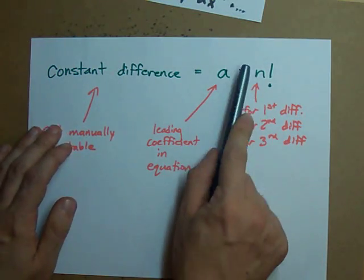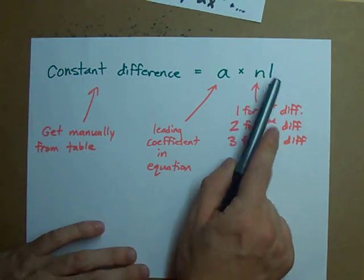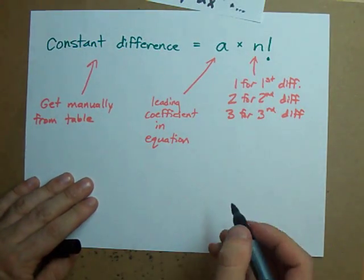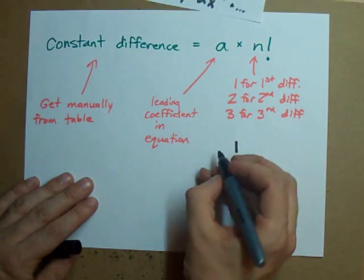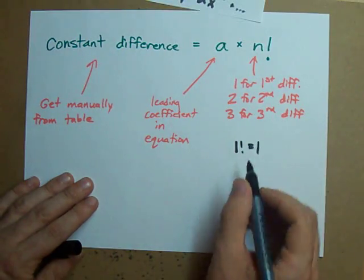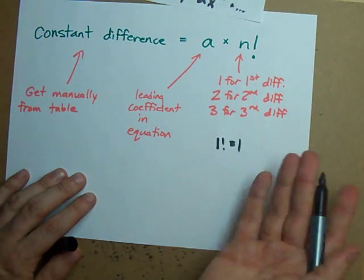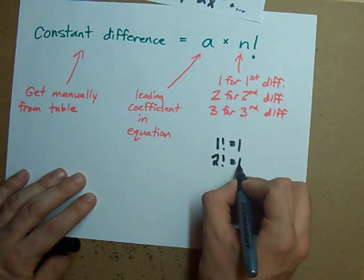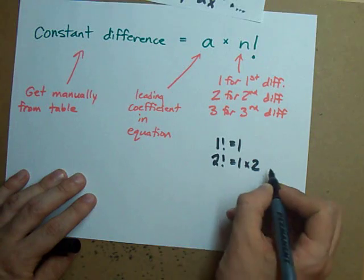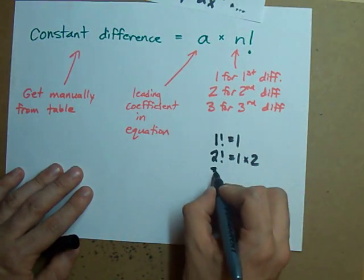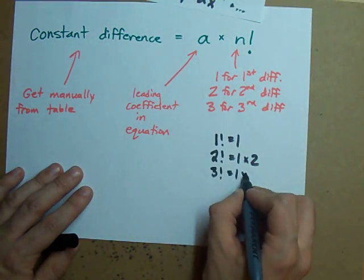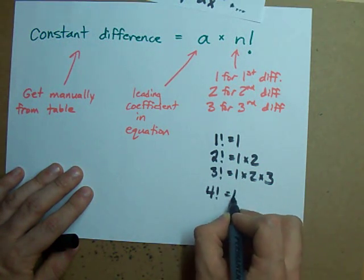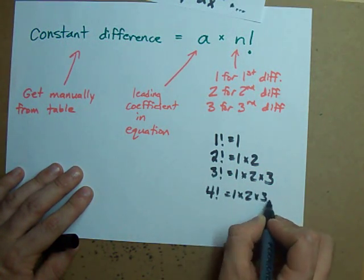Now what this exclamation mark or factorial means is that if n is 1, 1 factorial is 1. 2 factorial means you take 1 and you multiply it by 2. 3 is 1 times 2 times 3. 4 factorial is 1 times 2 times 3 times 4.